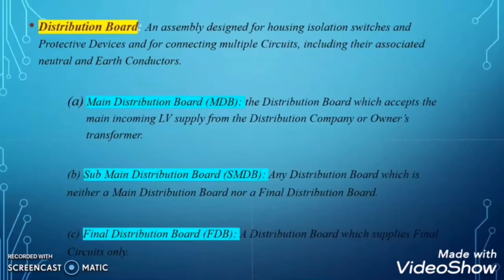As per the ADDC regulation, the distribution board is defined as an assembly designed for housing isolation switches and protective devices, and for connecting multiple circuits including their associated neutral and earth conductors. Its simple meaning is the distribution board is nothing but an assembly for housing all the protective and isolating devices, including their outgoing and incoming circuits with the neutral and earth conductors.